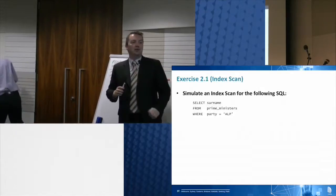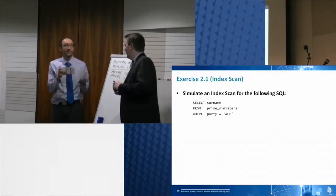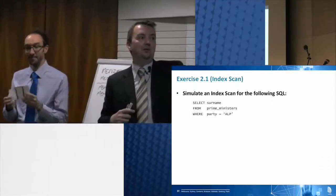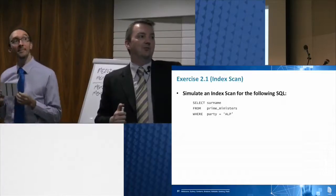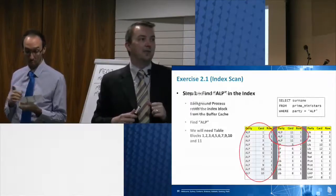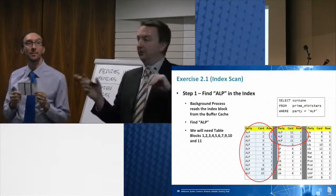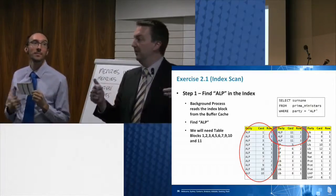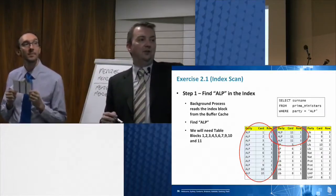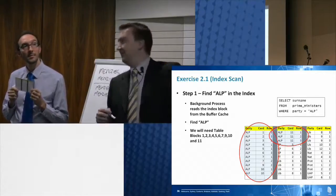Exercise number 2 - we're going to do an index scan of a different index. This one is on party, and the SQL we're going to simulate is: select surname from Prime Ministers where party equals ALP. So we're going to find ALP in the index. Before, when I was looking for Menzies, not so many entries. This time for ALP there are lots of entries in there. I can see I'm going to have to go to card 1, 2, 3, 4, 5, 6, 7 twice, 9, 10, and 11. Buffer cache, you're going to be very busy.